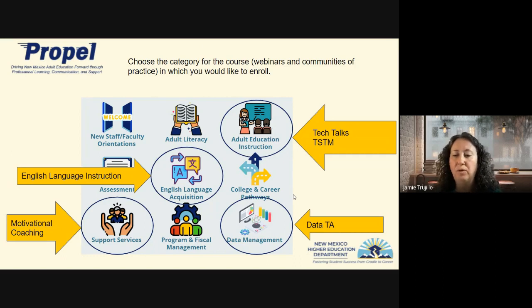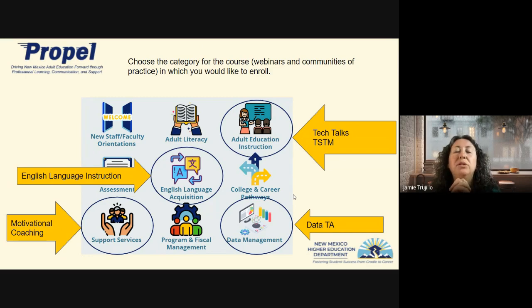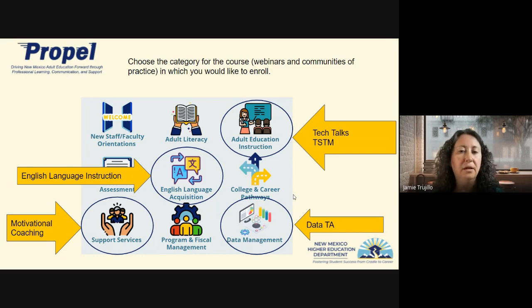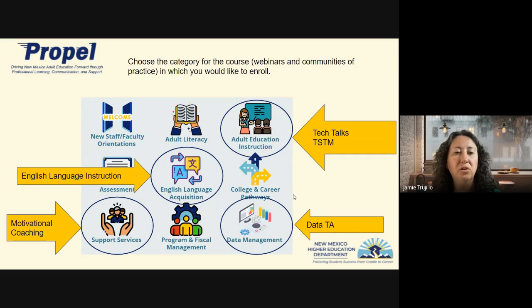When you go in, you will log in — the easiest way is with your NM Delta account. If you don't have an NM Delta account, you can request one by going to the NM Delta website, which I'll put in the chat. On the portal you can see English language acquisition courses in the middle, adult education instruction, data management, support services, program and fiscal management, adult literacy, and new staff and faculty orientations coming soon. There are many different topics that are now or will be available in that portal.